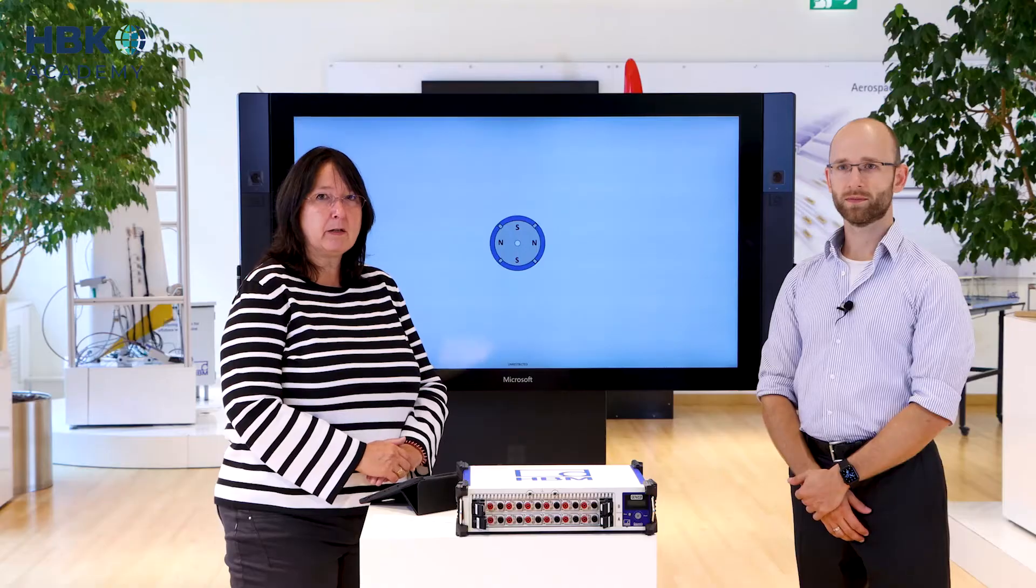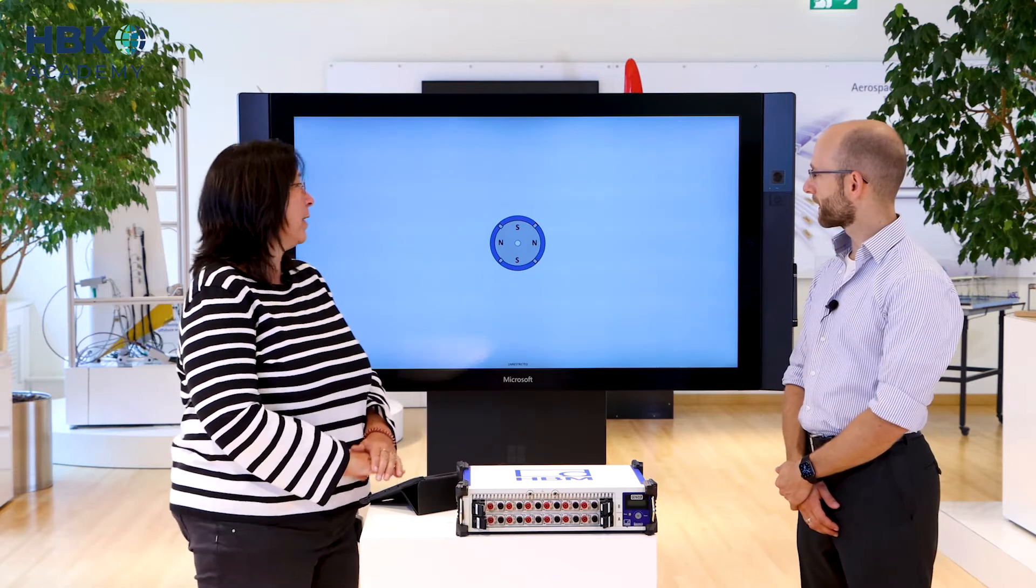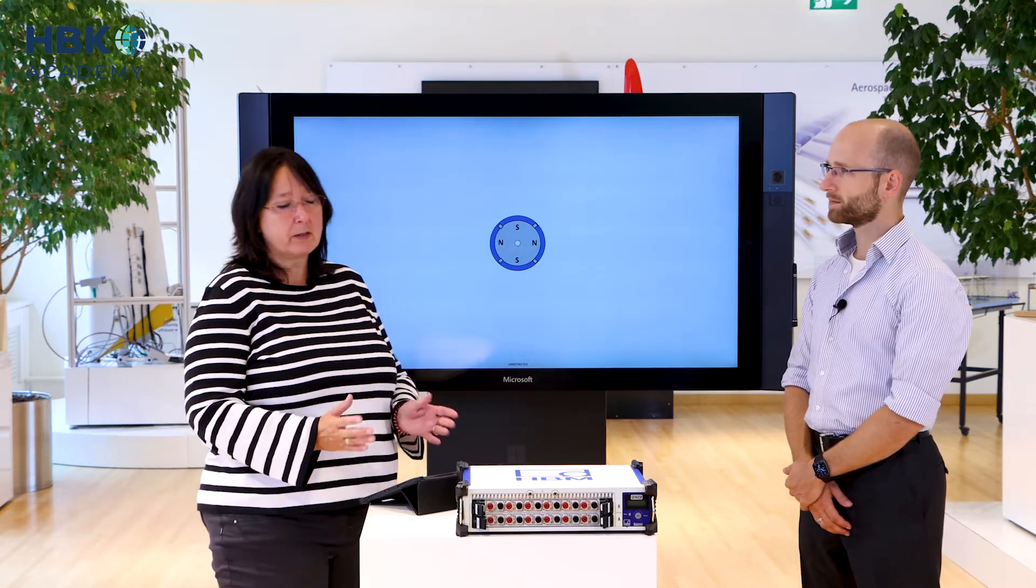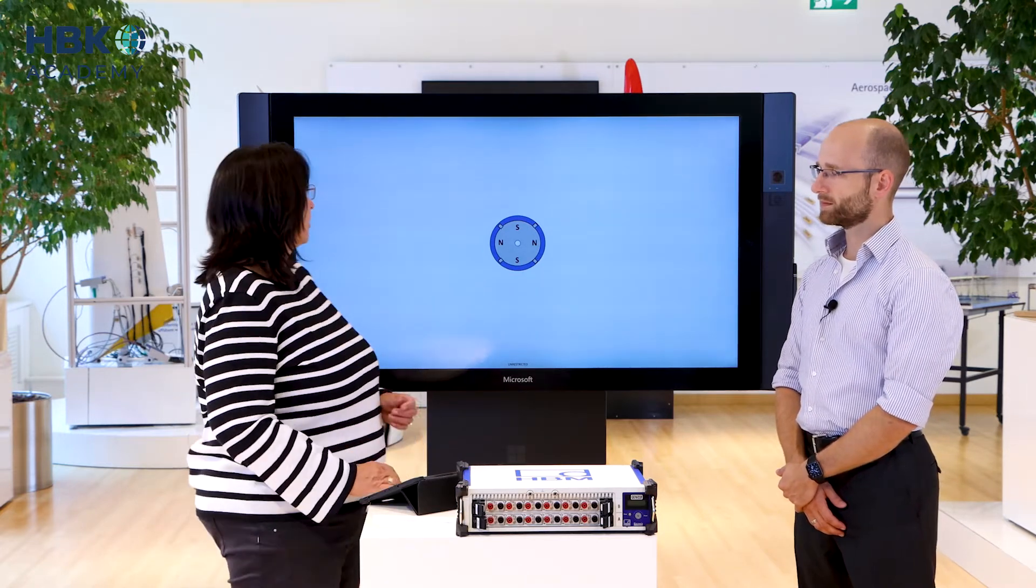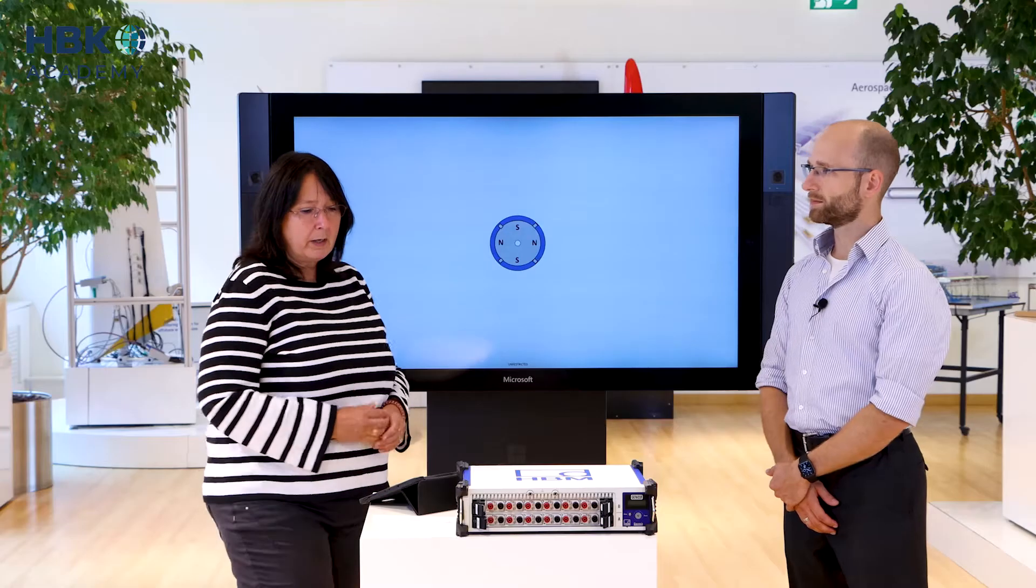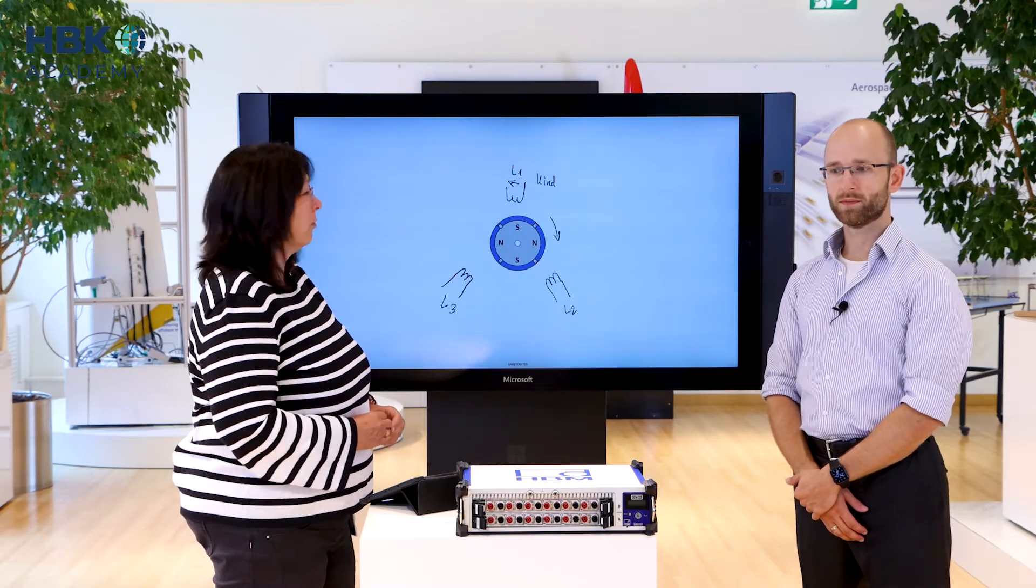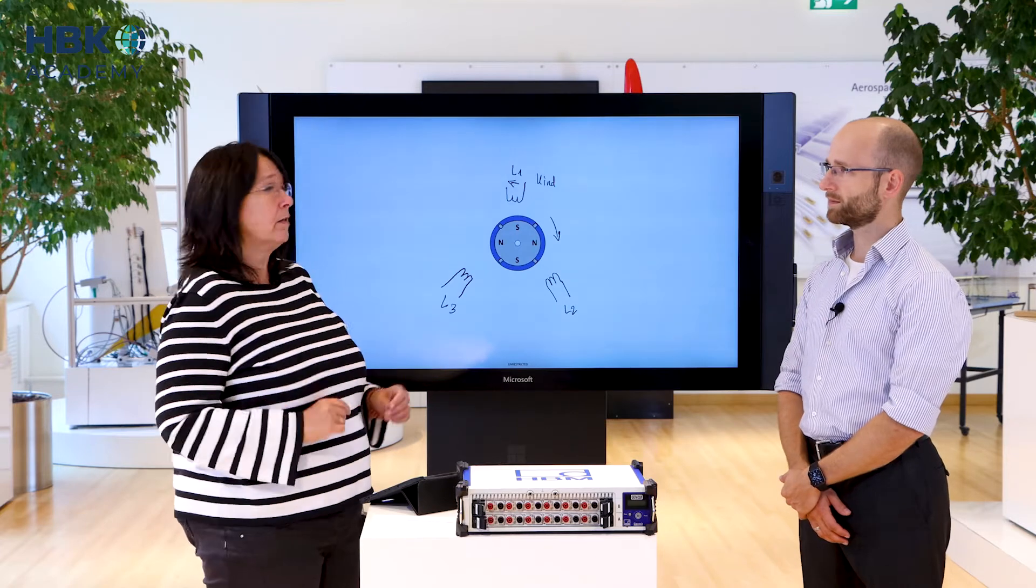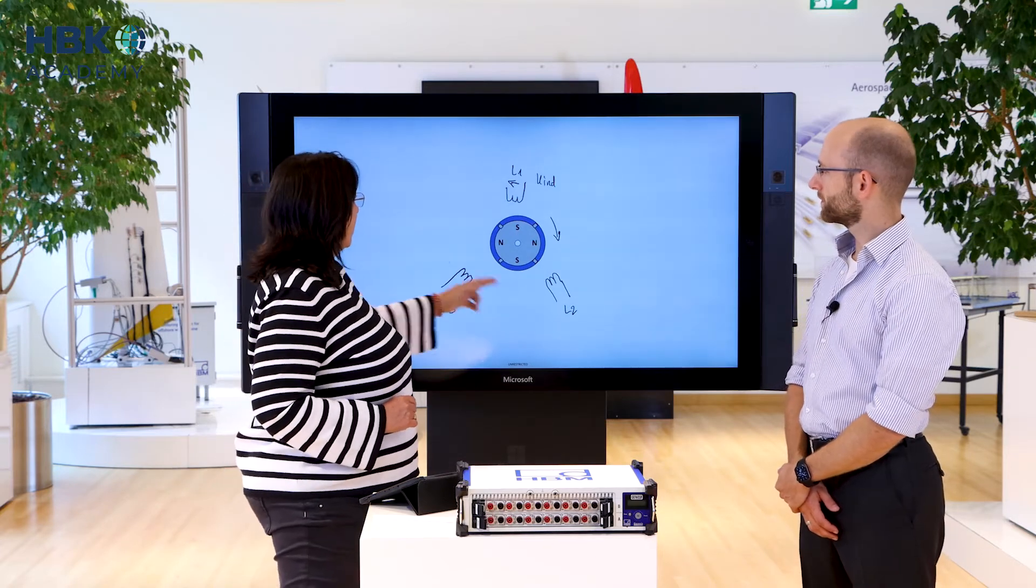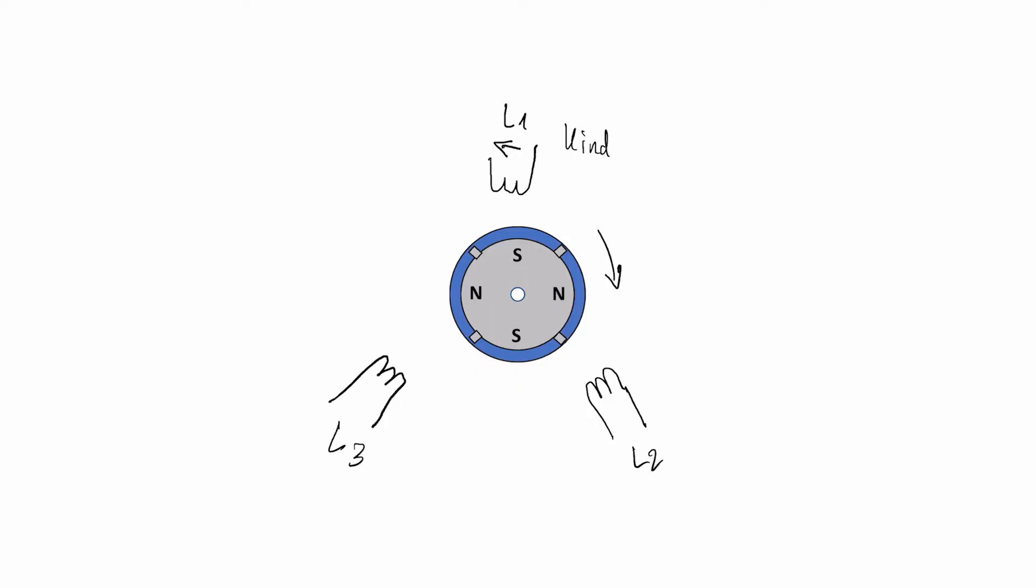So let me explain a bit around the permanent magnet synchronous machine. What we can see here, this is a rotor and you see the interior magnets, they are painted in blue and around this rotor there's the stator and the stator has windings and when the rotor rotates there is a voltage induced into the stator windings which we call the back EMF.